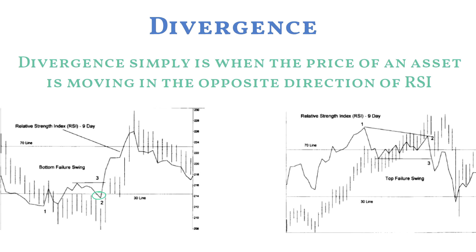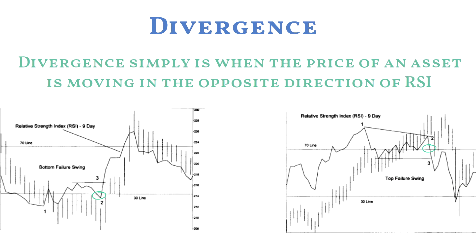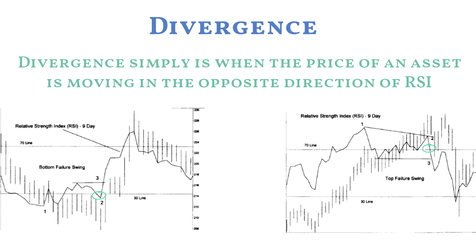Similarly, a bearish divergence occurs when a stock shows higher highs but RSI shows lower highs. This is a sign that upward momentum is slowing and a bearish reversal may occur. After spotting a bearish divergence, a trader might use a cross back below 70 as an exit signal. Using RSI to spot divergences and identify potential overbought and oversold conditions can help traders find potential trading signals.